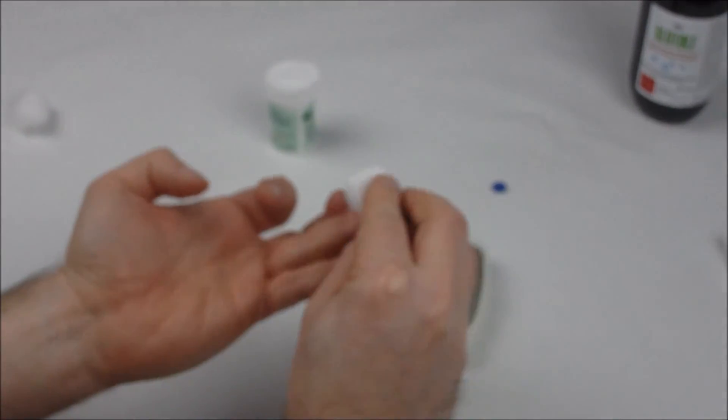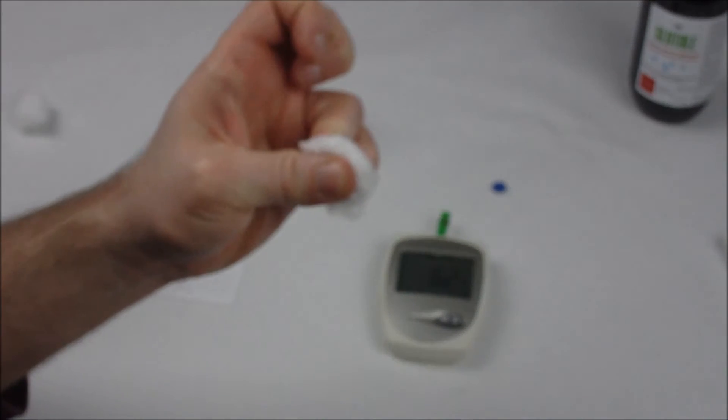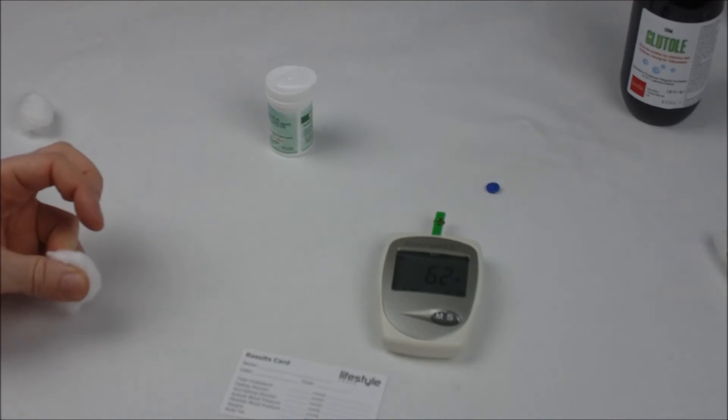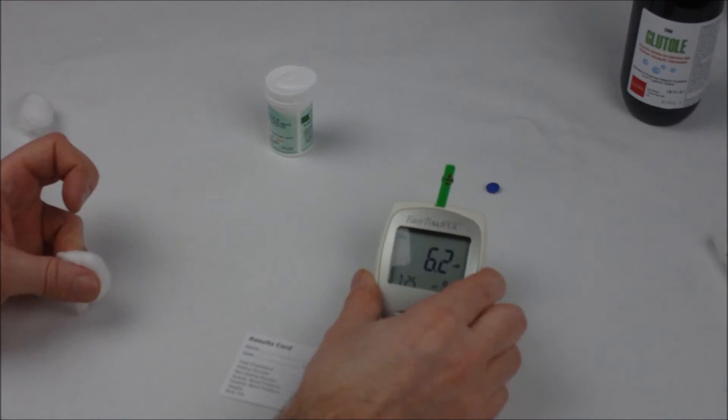Grab a piece of cotton wool. Hold that over your bloody finger. And now alongside your non-fasting glucose level you're going to write the value that you've got. 6.2 in my case.